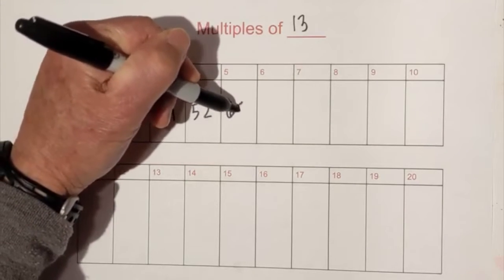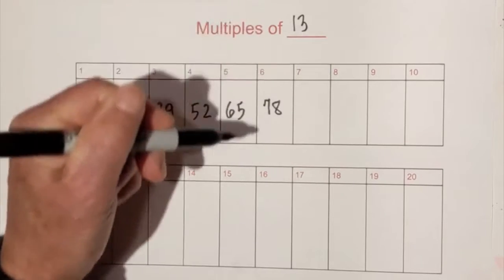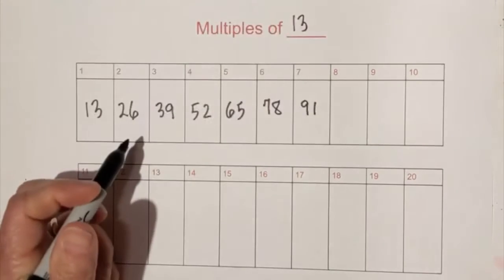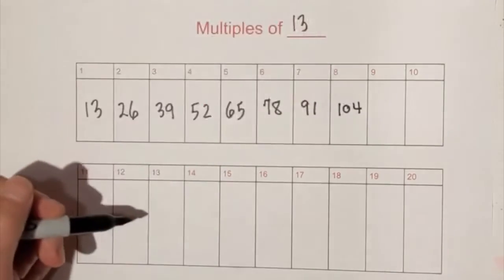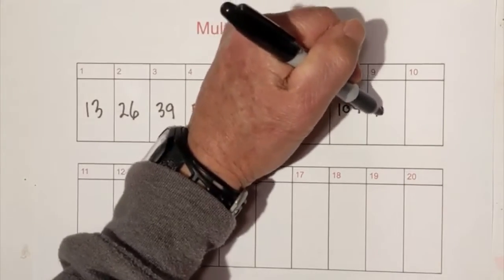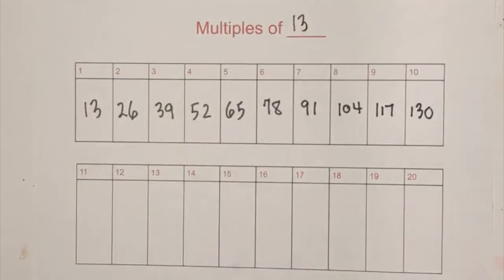52, 5 times 13 is 65. Then we have 78, then 91, then times 8 is 104. Then 117 and 130. So there we go, multiples of 13.